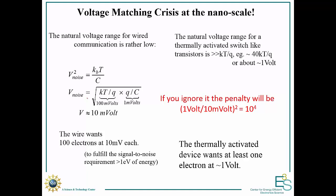And as we saw, the reason for that was the voltage matching crisis at the nanoscale. The wires only want millivolts in order to overcome noise, but the transistors are required to operate at 1 volt, and so we get this huge power penalty.